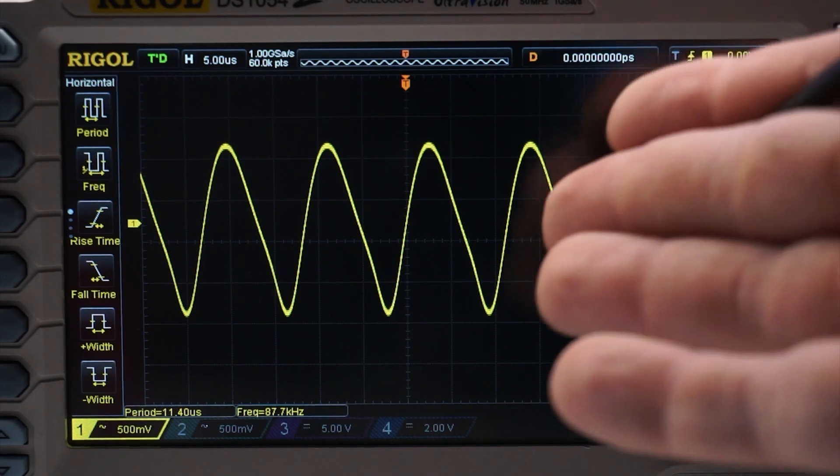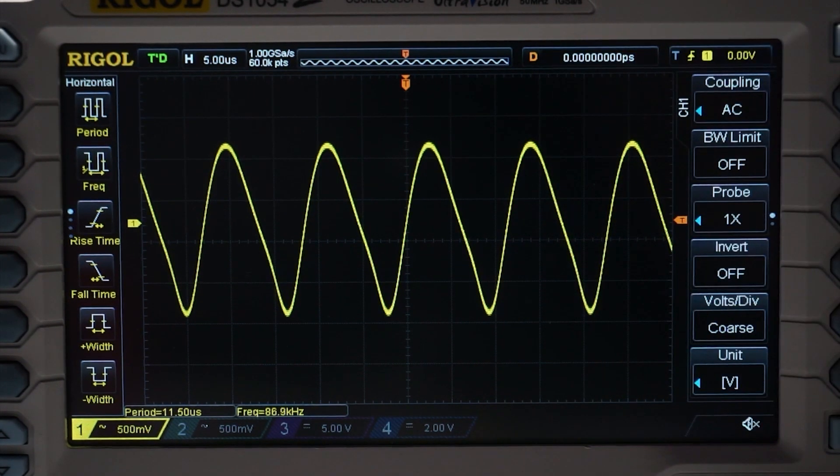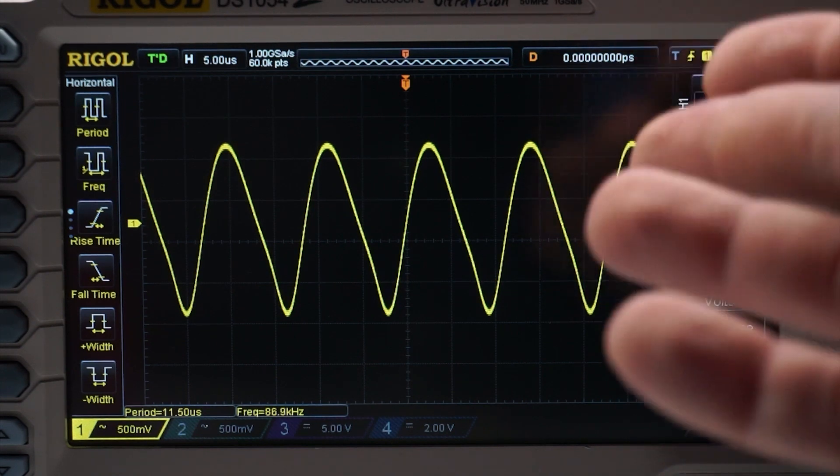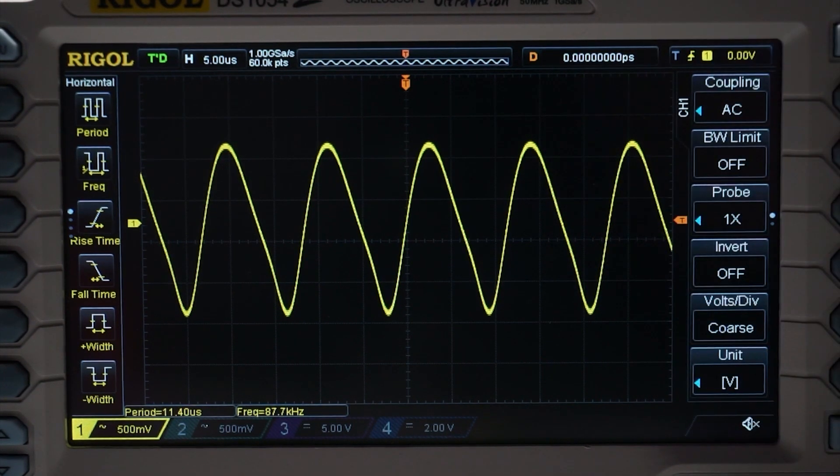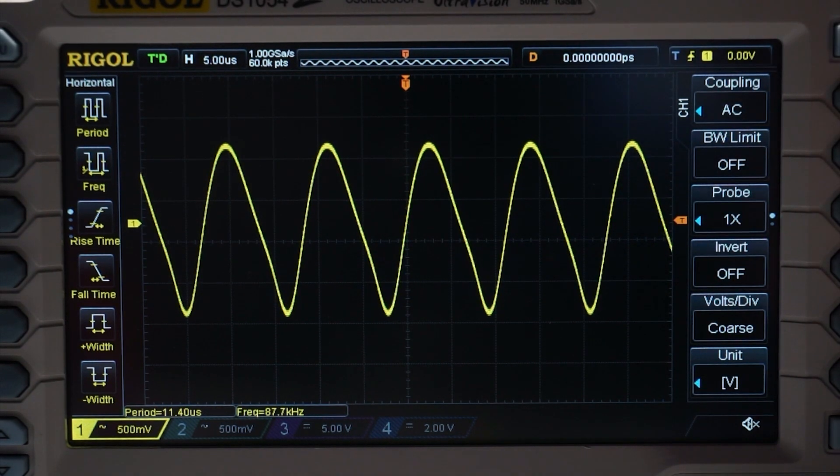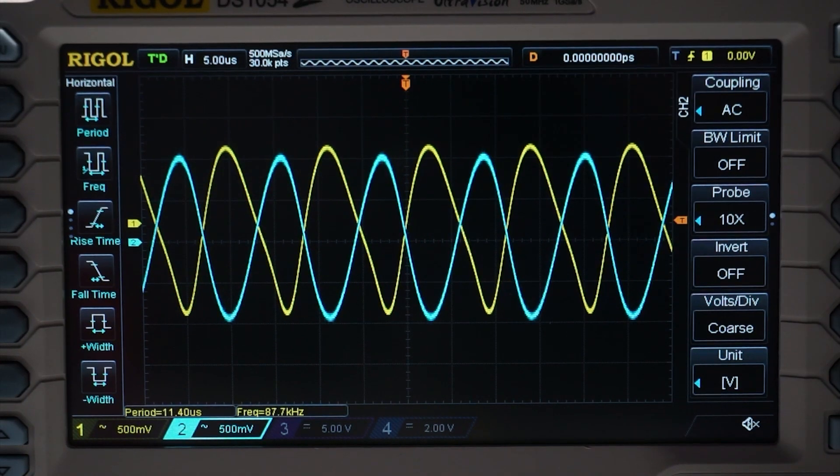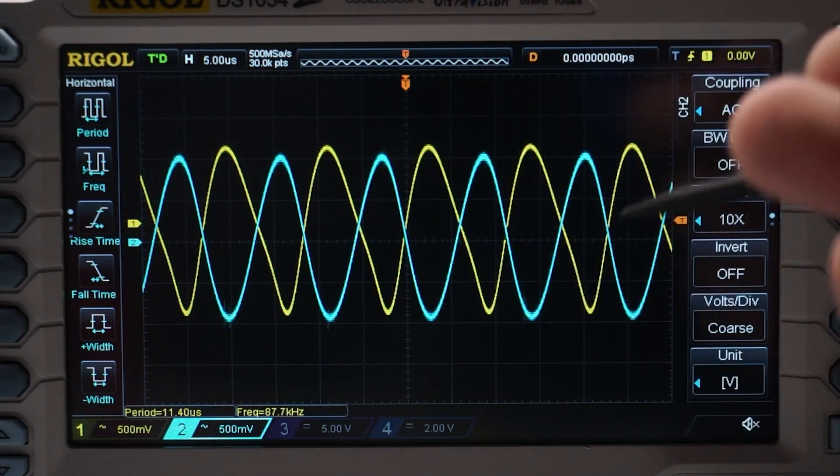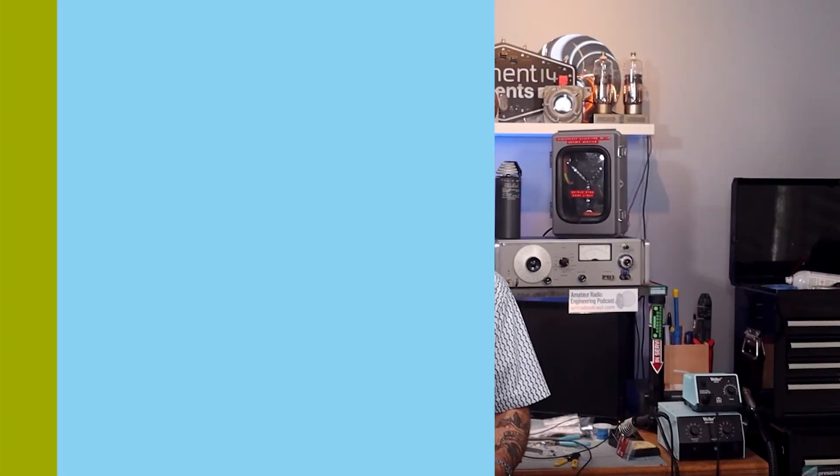A common emitter amplifier has this kind of characteristic. Normally you use like a common base BJT amplifier, but I didn't want to cover that because it's not as common in the textbooks. Let's go ahead and look at channel two, which is our feedback. You can see that that's perfectly 180 degrees out of phase with the collector of the transistor.